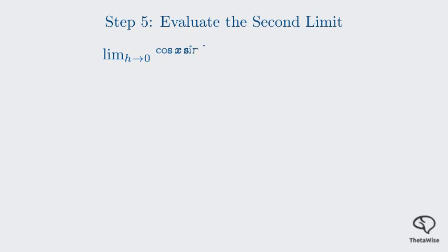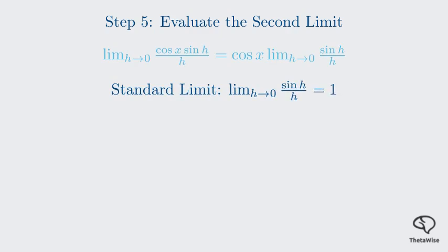Now let's evaluate the second limit. The setup is very similar. Here, cosine x is our constant with respect to h, so we can pull it outside the limit as well. This gives us cosine x times the limit as h approaches 0 of sine h over h. This is the same standard limit we saw in the first proof. As we know, the limit as h approaches 0 of sine h over h is 1. Therefore, our second term simplifies to cosine x times 1, which is just cosine x. This result is highlighted in green.